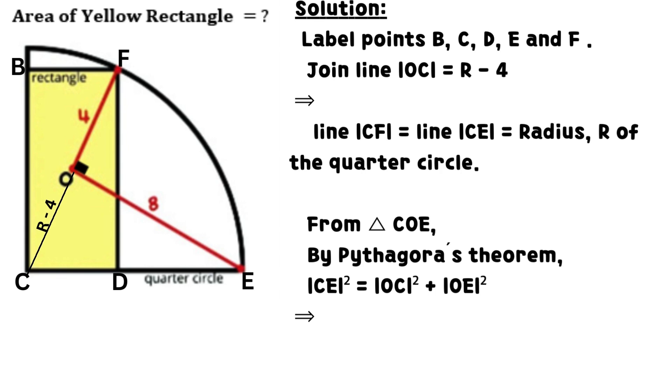By Pythagoras theorem, the square of line CE equals the sum of the square of line OC and the square of line OE.